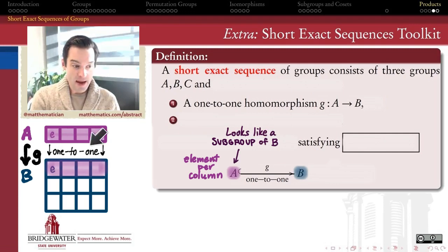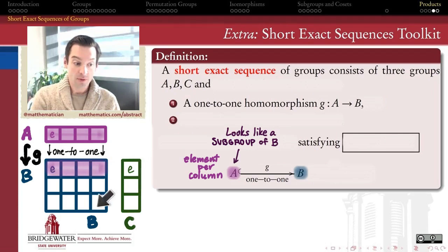Alright, so that's how A relates to B in this short exact sequence. What about this third group? What's the role that that group plays? Well, that group is going to kind of play the role of the rows.